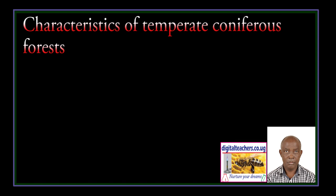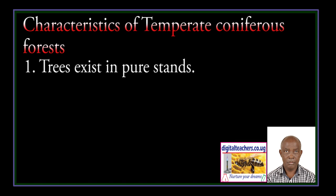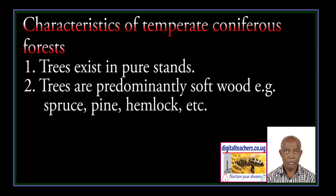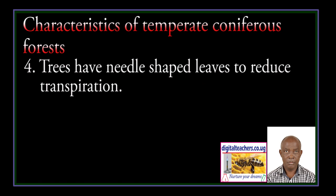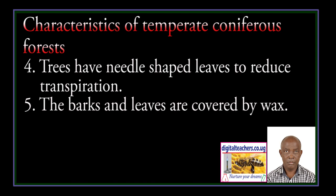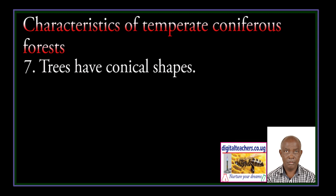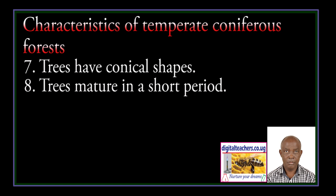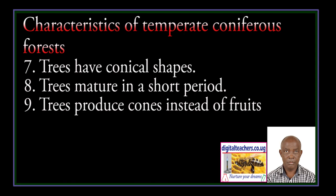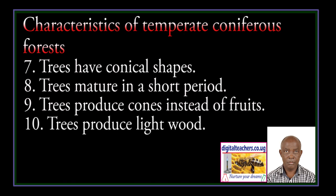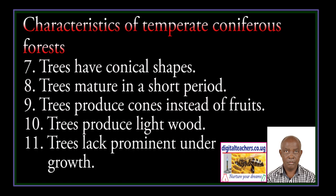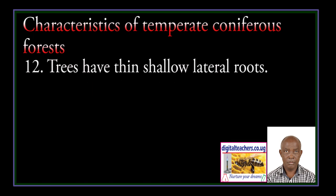Characteristics of temperate coniferous forests: they exist in pure stands; they are predominantly softwood, for example spruce, pine, hemlock; they are evergreen throughout the year; they have needle-shaped leaves to reduce transpiration; the barks and leaves are covered by wax; trees have thin, tall, straight stems; trees have conical shapes; trees mature in a short period; trees produce cones instead of fruits; trees produce light wood; trees lack prominent undergrowth; trees have thin, shallow, lateral roots.